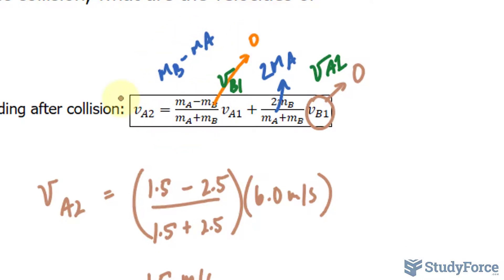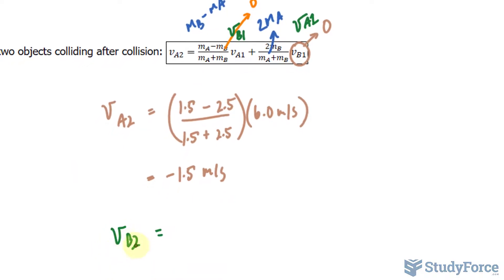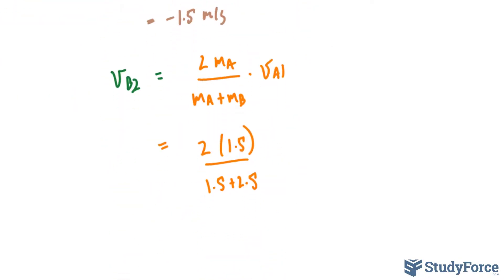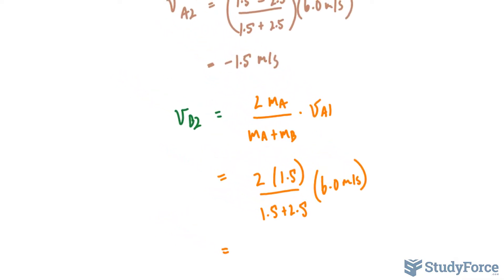Therefore this whole term goes to nothing. And we have VB2 is equal to 2 times M sub A over M sub A plus M sub B times the velocity of A before the collision. Now we have to substitute our values. 2 times 1.5 over 1.5 plus 2.5 times the velocity of A before the collision, 6.0 meters per second. Now of course, you should always include the units while you're doing this. But I've left them out just for simplicity's sake.